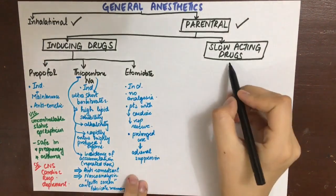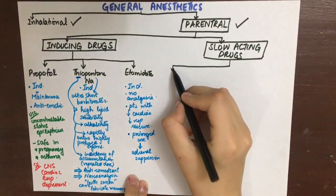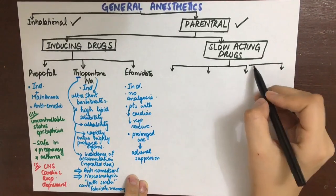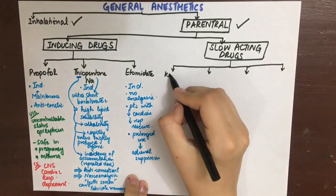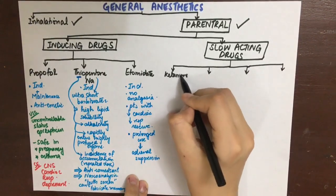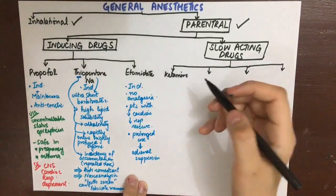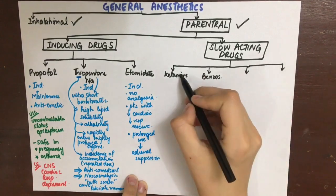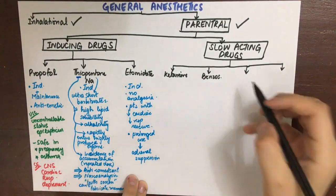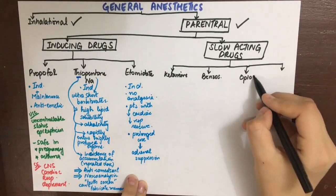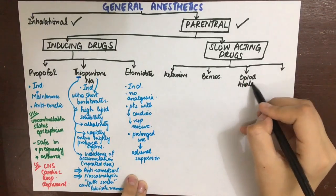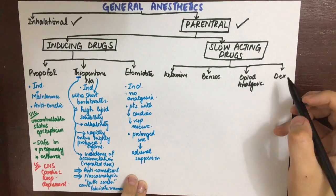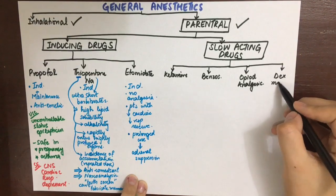The slow-acting drugs used in the maintenance of anesthesia include ketamine, benzodiazepines, opioid analgesics, and dexmedetomidine. Ketamine and benzodiazepines can also be used for induction.